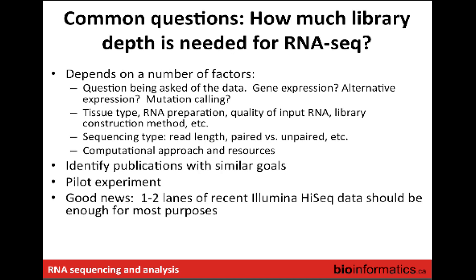Other factors like tissue type, RNA preparation, RNA quality, library construction method, and read length may also influence how much data you need. One recommendation is to find a publication with a similar experimental design and use that as a starting point. Even better, do a pilot experiment with a small number of samples, then look at the data, do some down-sampling experiments, and figure out the sweet spot. The good news is that modern Illumina instruments produce so much data that one lane or even half a lane or a third of a lane is sufficient for most purposes.